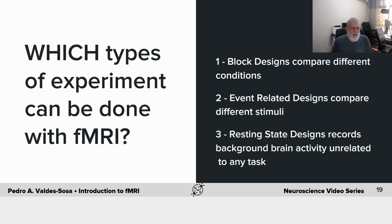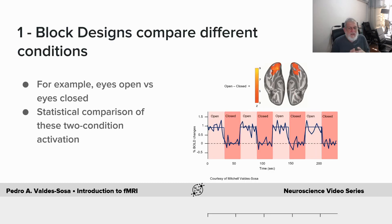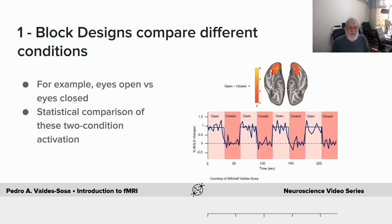Which types of experiments can be carried out? This will depend on how we present the stimuli and perform the statistical analysis. With block designs, you have one condition — say, eyes open — and another condition — say, eyes closed. You do a statistical comparison of the BOLD effects of the collected images, obtaining where there's been a significant change in activity related to the difference between the two conditions. Block designs serve to compare different conditions.